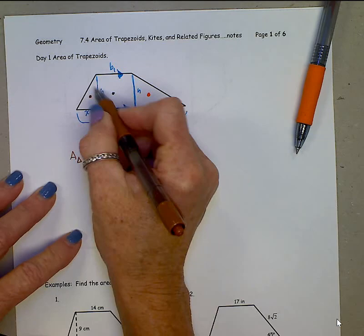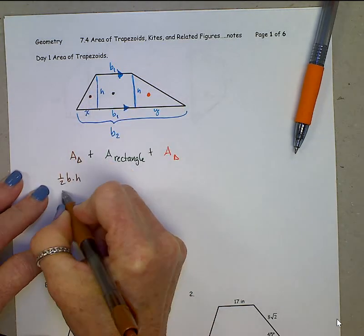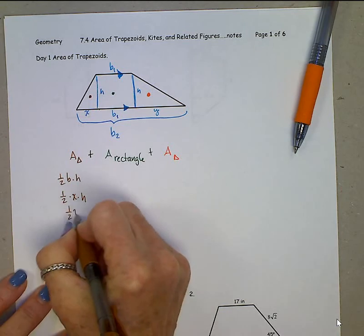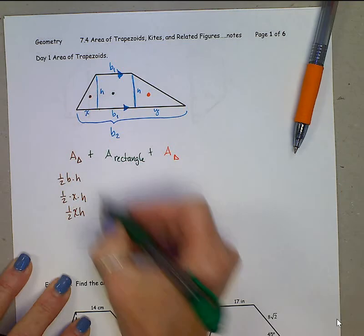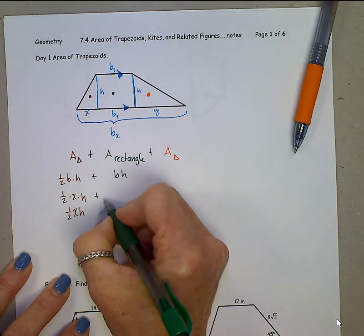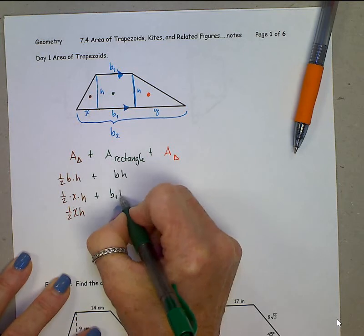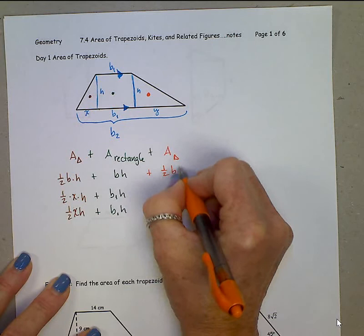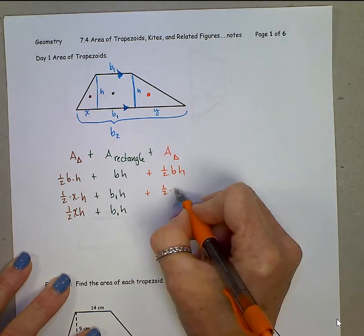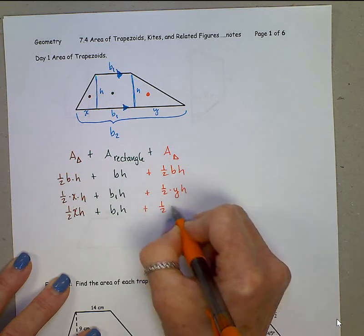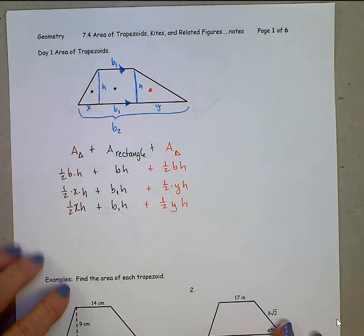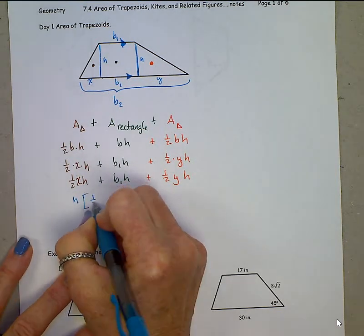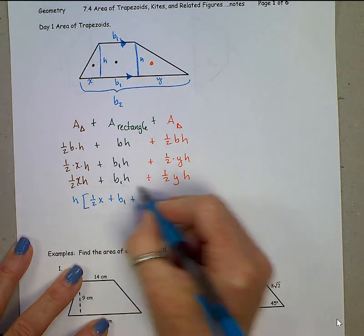Alright, area of this triangle over here, 1 half base times height. Its base is x, times its height is h. So this is just 1 half xh. Area of this rectangle, base times height. Its base is base 1 times its height. That's all we can do there. Area of this last triangle, 1 half base times height, its base is y, times its height is h. Alright, now let's do some factoring. Clearly there's an h common in all of these guys. So let's pull out that h. 1 half x plus b1 plus half y.